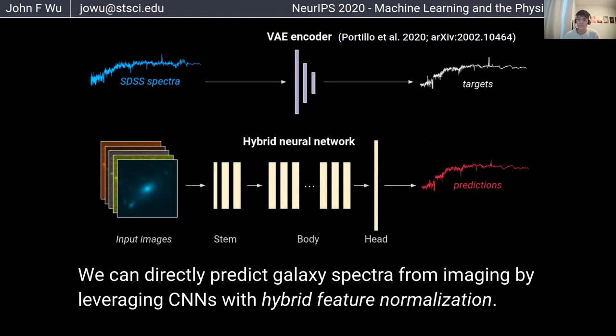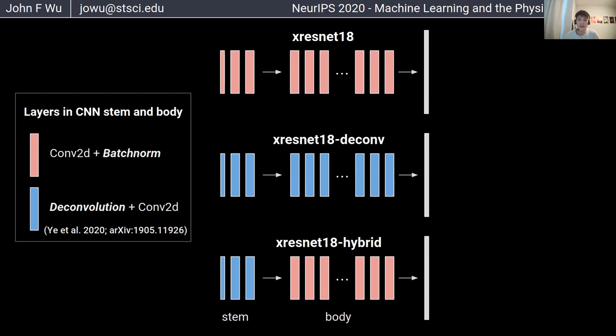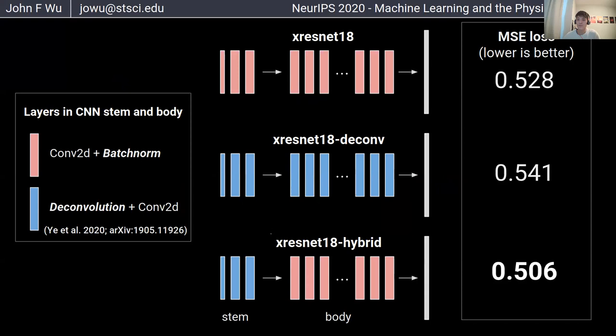We test different feature normalization methods — specifically batch normalization and deconvolution. Deconvolution layers, shown in blue, force image features to be represented sparsely. We substitute deconvolution layers in the stem and body of the CNN, including a hybrid approach shown here. The strongest performance comes from this hybrid approach, where deconvolution is used in the early layers of the CNN stem and traditional batch normalization is used throughout the rest of the model. We think this encourages the model to represent low-level galaxy features efficiently, while still allowing redundancy later to express symmetries such as rotation or translation invariance expected in astronomical imaging.